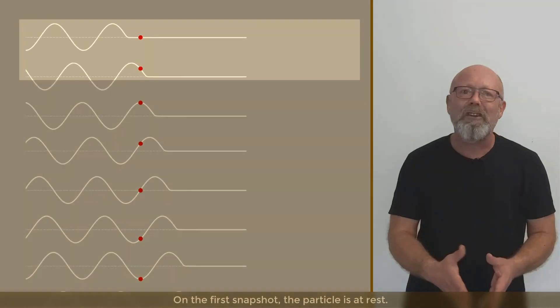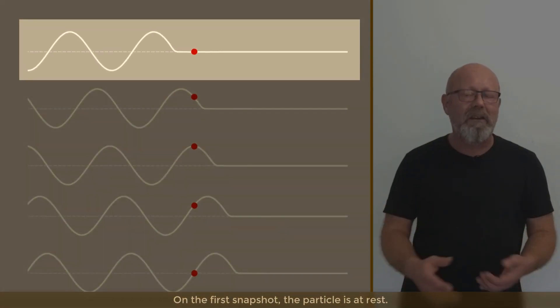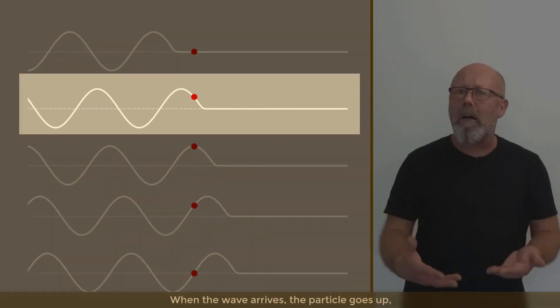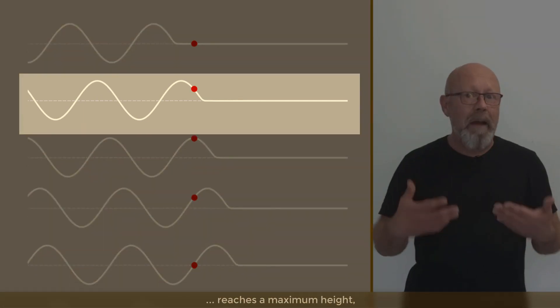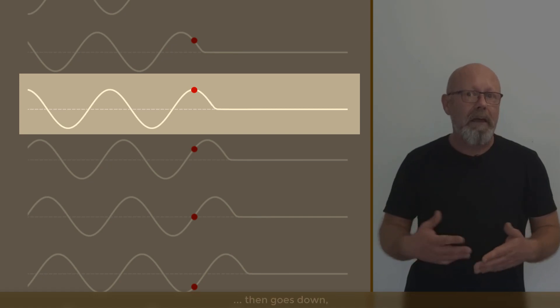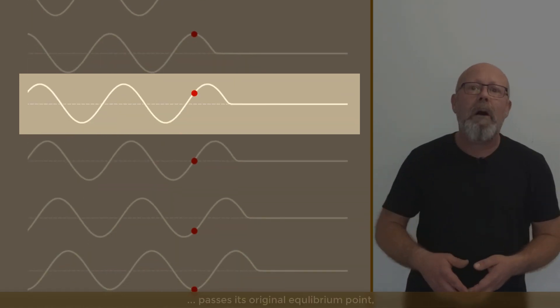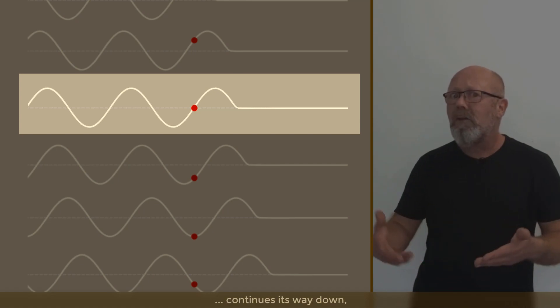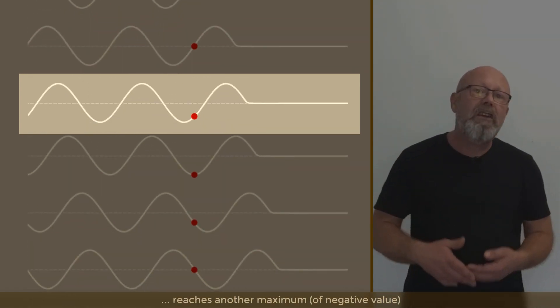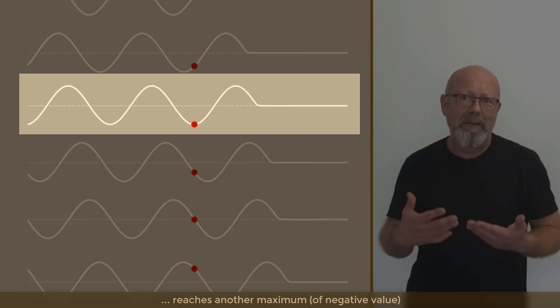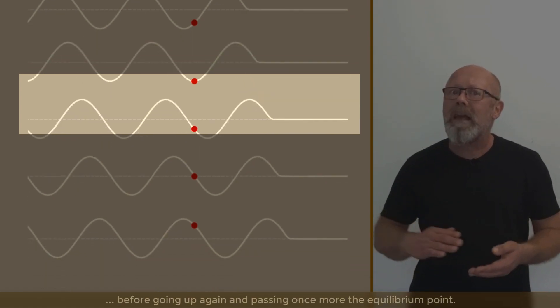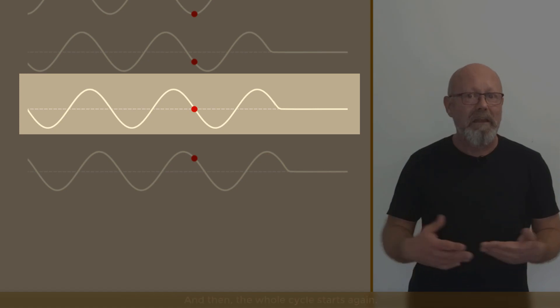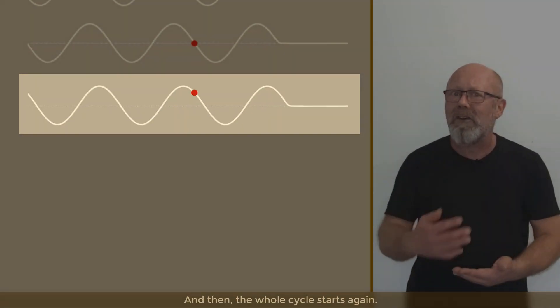On the first snapshot, the particle is at rest. When the wave arrives, the particle goes up, reaches a maximum height, then goes down, passes its original equilibrium point, continues its way down, reaches another maximum of negative value, before going up again and passing once more the equilibrium point. And then the whole cycle starts again.